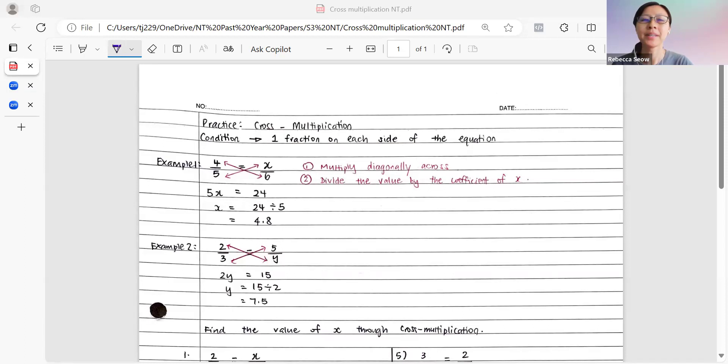For cross-multiplication to take place, there will be some conditions that need to be met first. So we need to make sure that at each side of the equation, there is only one fraction. If there is more than one fraction, we need to find a way to combine that more than one fraction into one before we can cross-multiply. Anyway, let's take a look at example one.